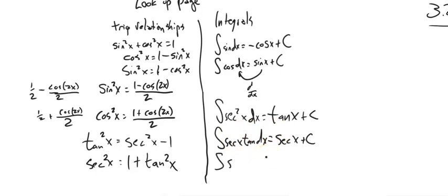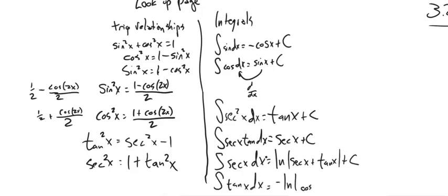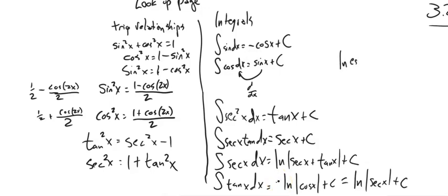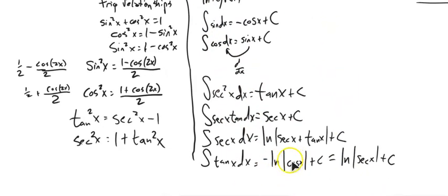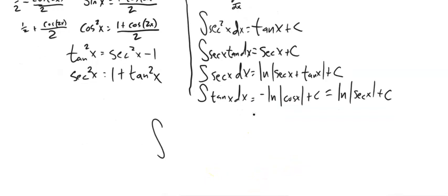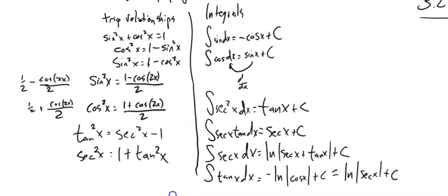A couple more: the integral of sec x alone is ln|sec x + tan x|. Just to point out — a negative out front of a log is the same as a negative-one exponent inside, so ln(cos x)⁻¹ = ln(1/cos x) = ln|sec x|. So those two forms are the same thing. You can derive the integral of tan x by writing it as sin/cos and using u = cos x.